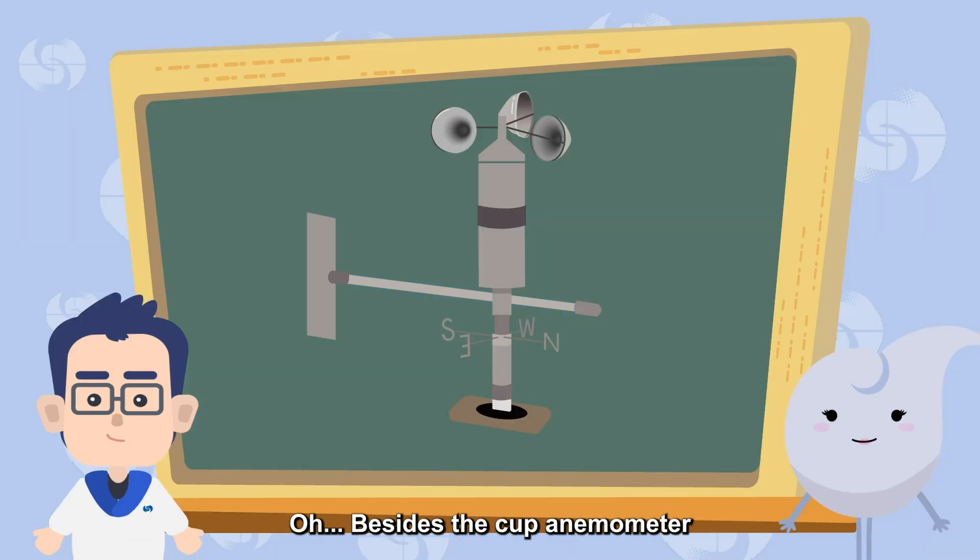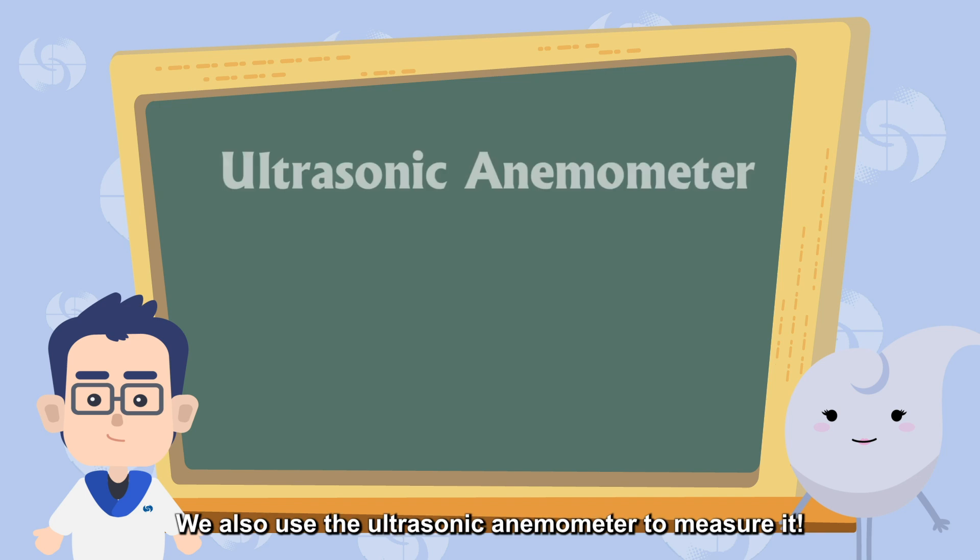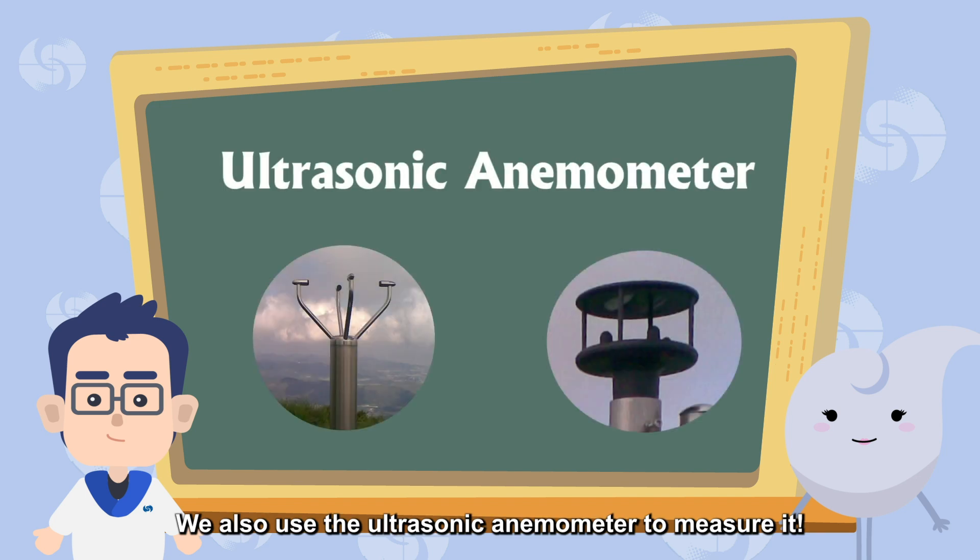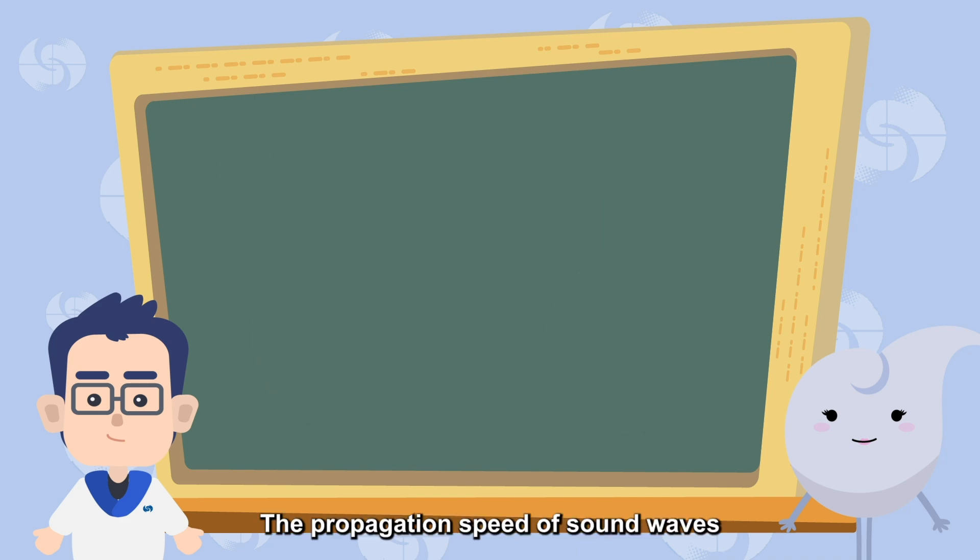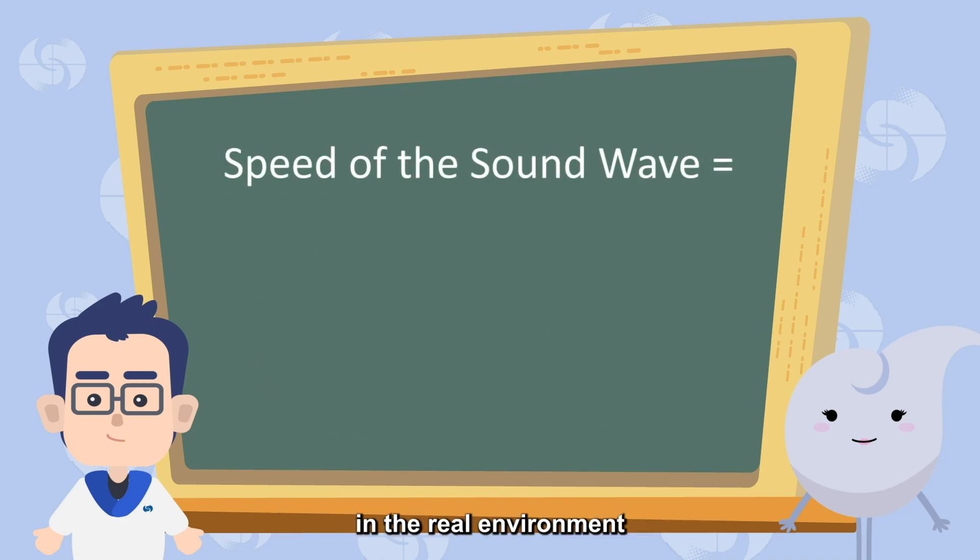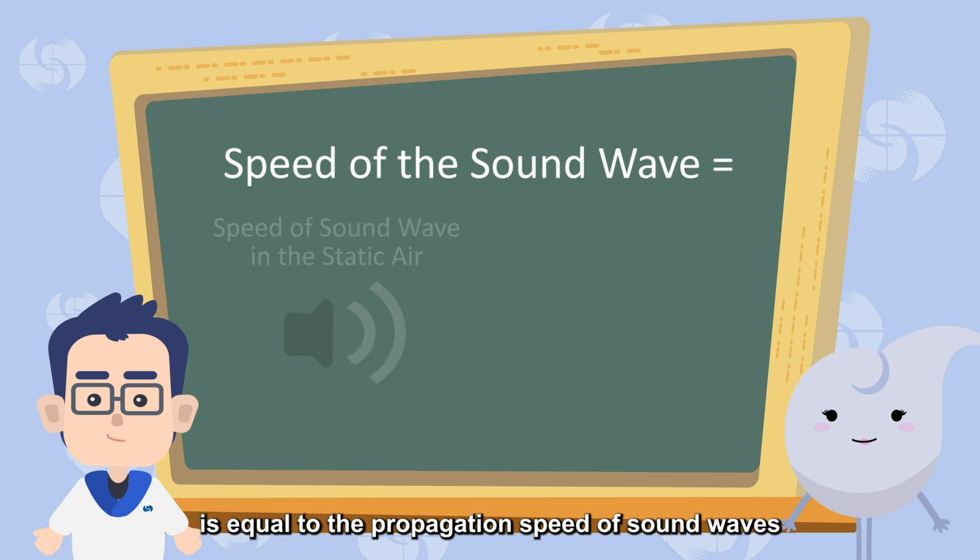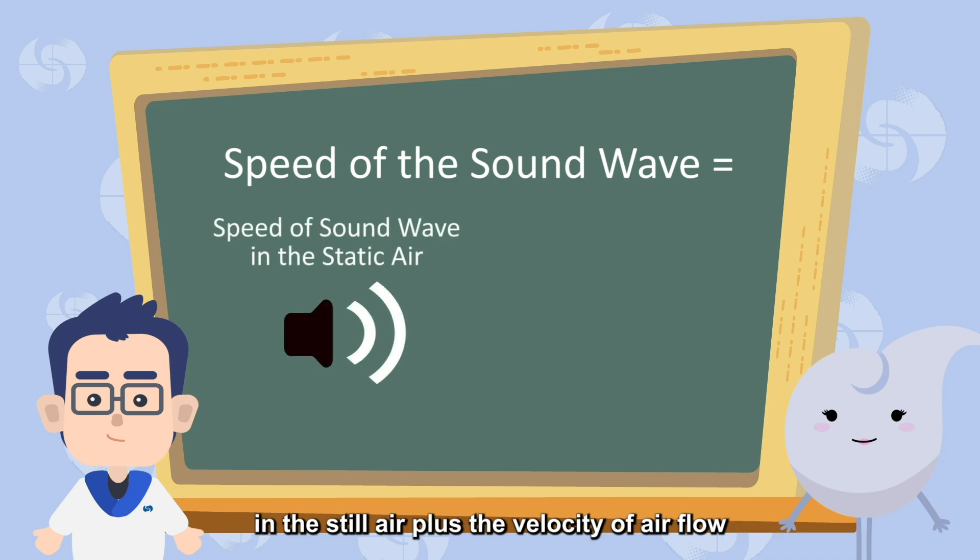Besides the cup anemometer, does the observatory use any other instruments to measure wind speed? We also use the ultrasonic anemometer to measure it. Ultrasonic anemometer? Yes. It uses the speed of sound waves to calculate wind speed. The propagation speed of sound waves in the real environment is equal to the propagation speed of sound waves in the still air plus the velocity of air flow in the atmosphere.